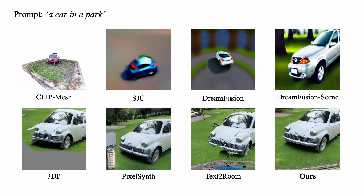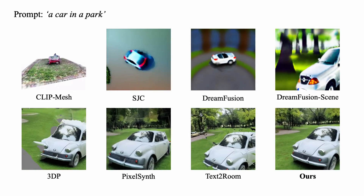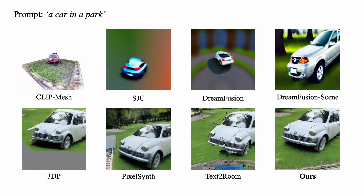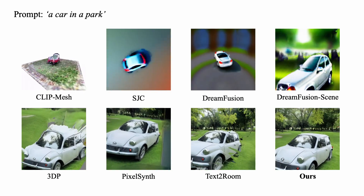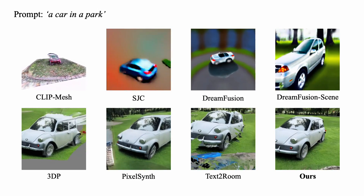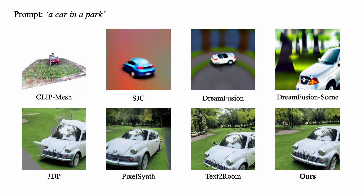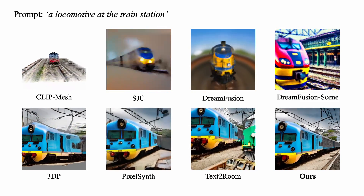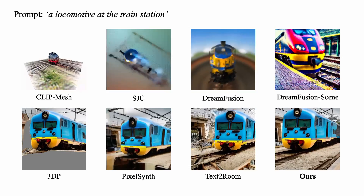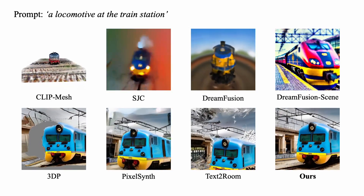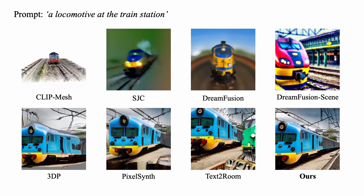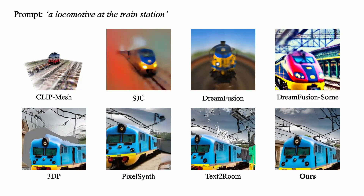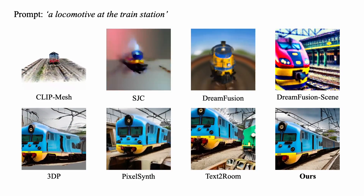Compared to novel view synthesis methods, the concurrent work Text2Room and ours leverage the text-conditioned diffusion model as the inpainting module to complete missing regions of 3D scenes. Unlike Text2Room, which uses polygon meshes to represent generated scenes, we adopt NeRF to encode the 3D scenes in an implicit network. With explicit mesh representation, Text2Room fails to generate some outdoor scenes and easily produces stretched geometry in regions of depth discontinuity. In contrast, our method generates both indoor and outdoor 3D scenes with complex structures and photo-realistic details.